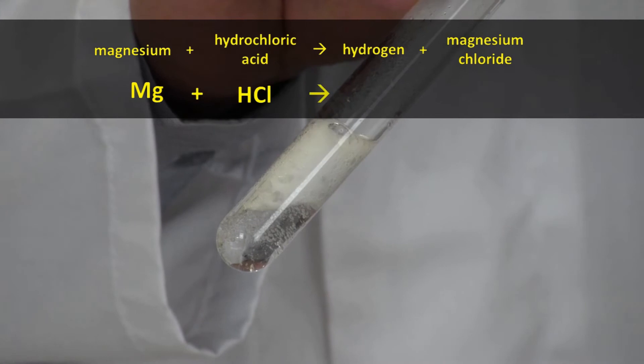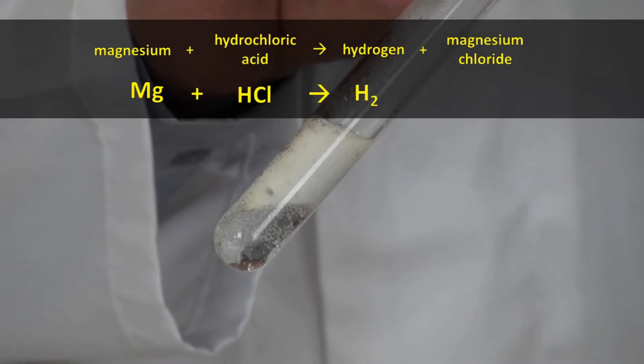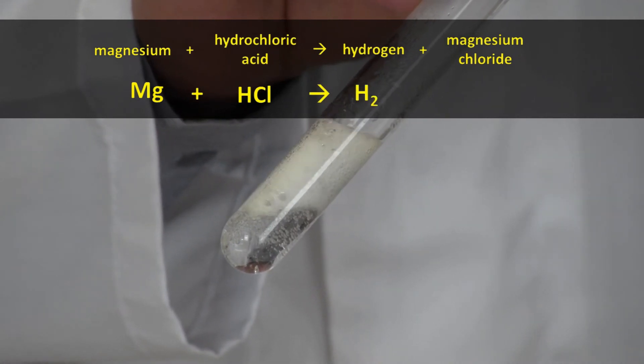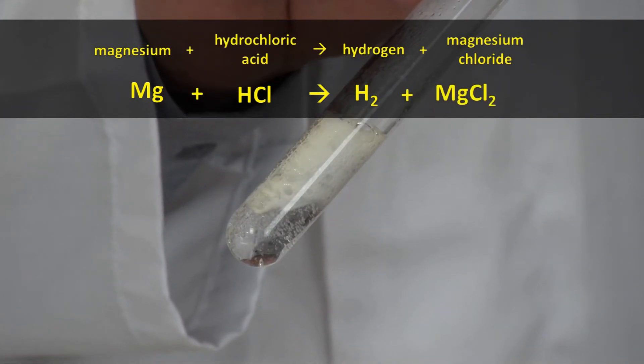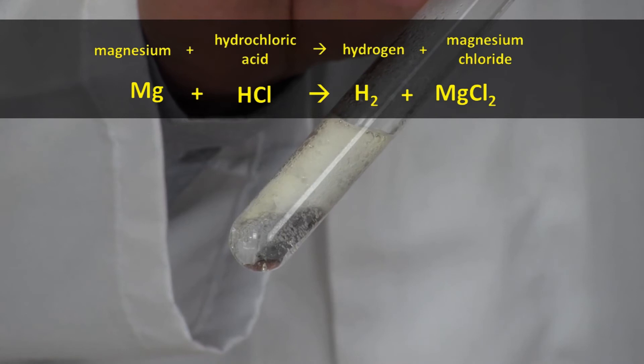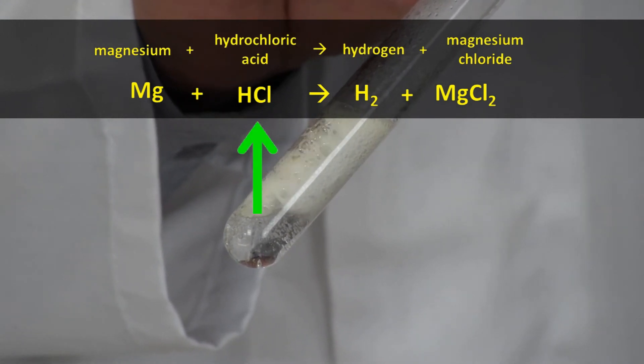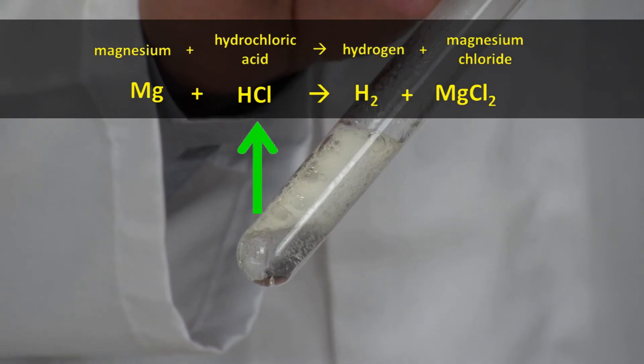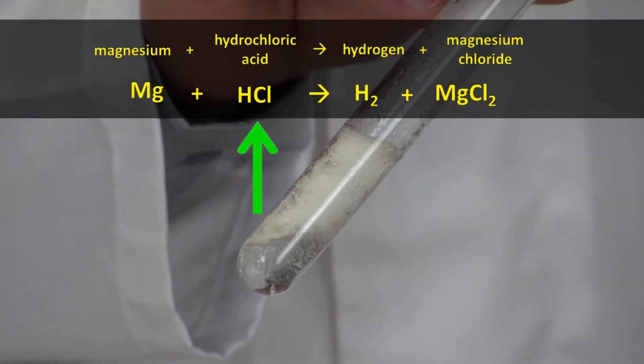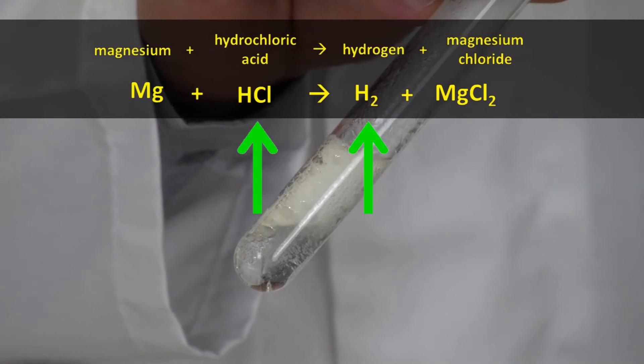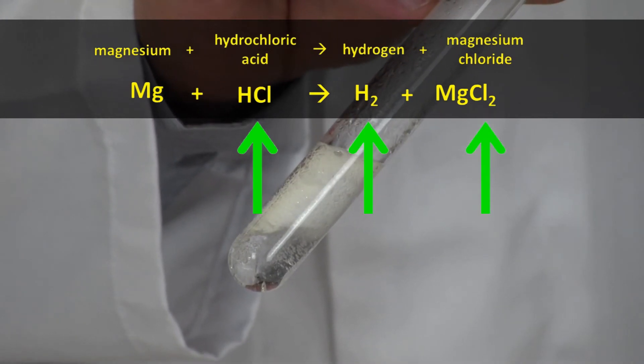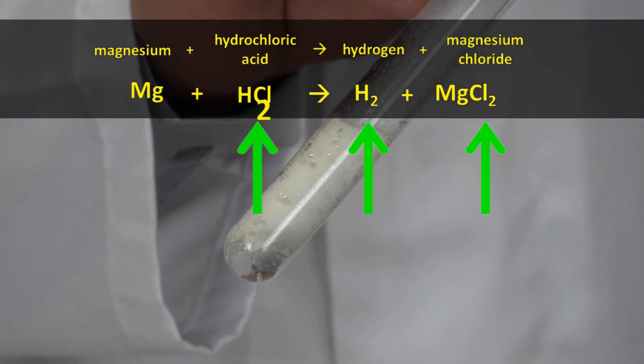In symbols we can write Mg plus HCl produces H2, the hydrogen atoms in hydrogen gas always come in pairs, plus MgCl2. This equation is unbalanced because while HCl is made of one H atom and one Cl atom, the products on the right show two H atoms and two Cl atoms. To balance the equation we need to put a 2 in front of the HCl.